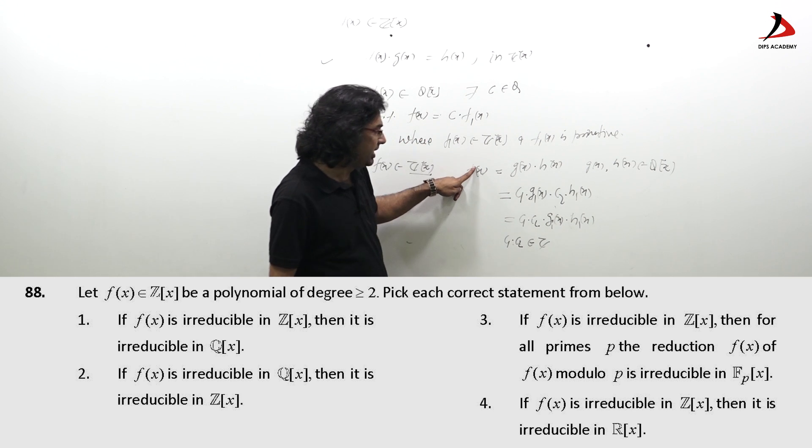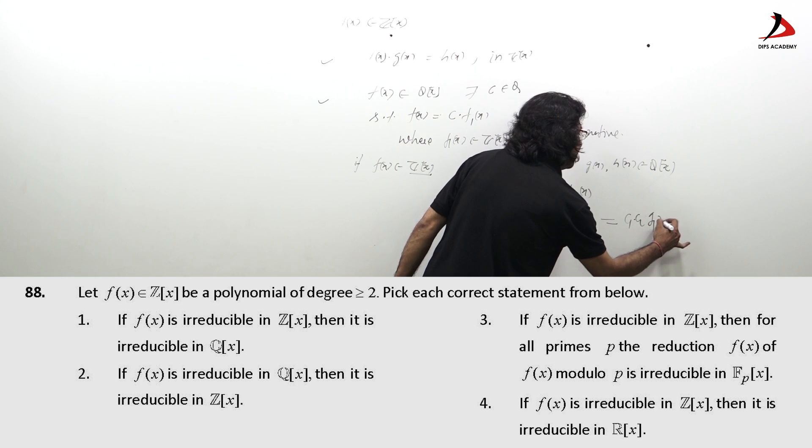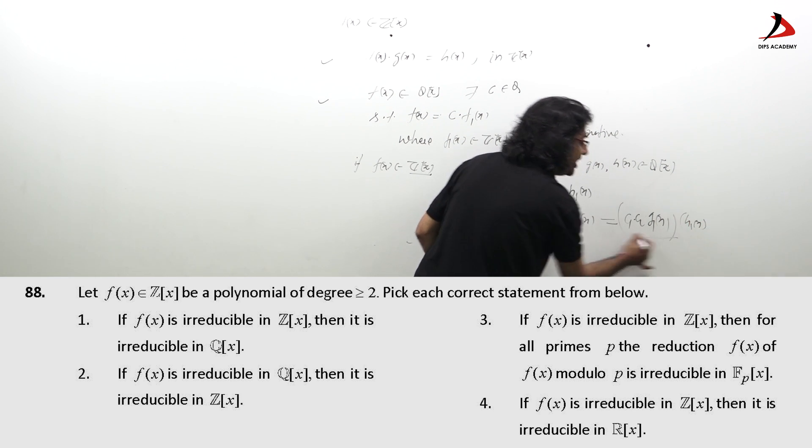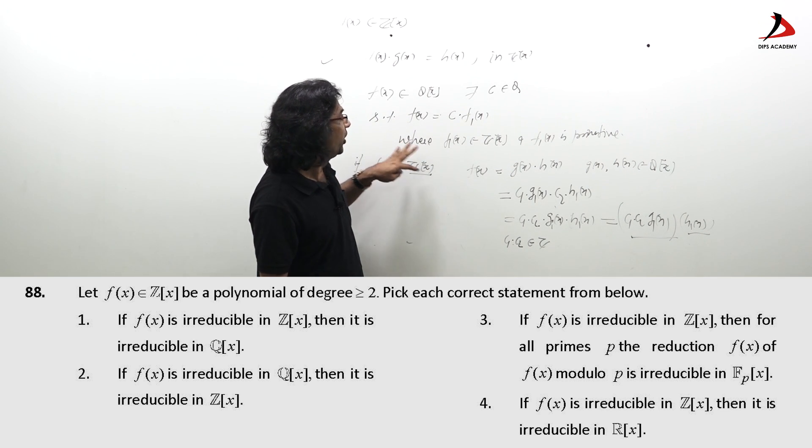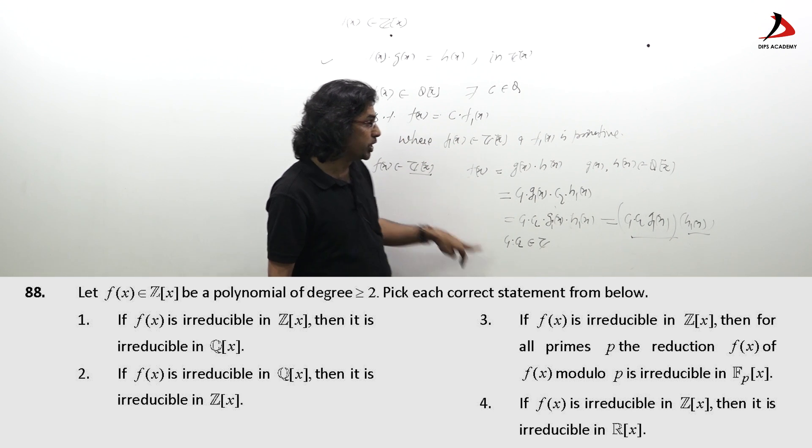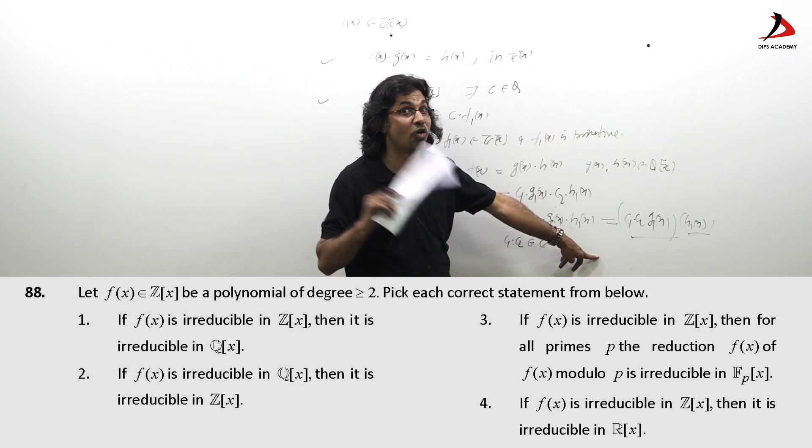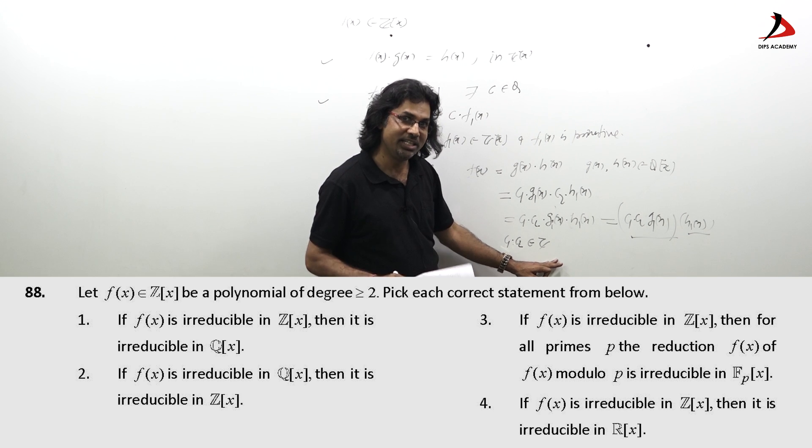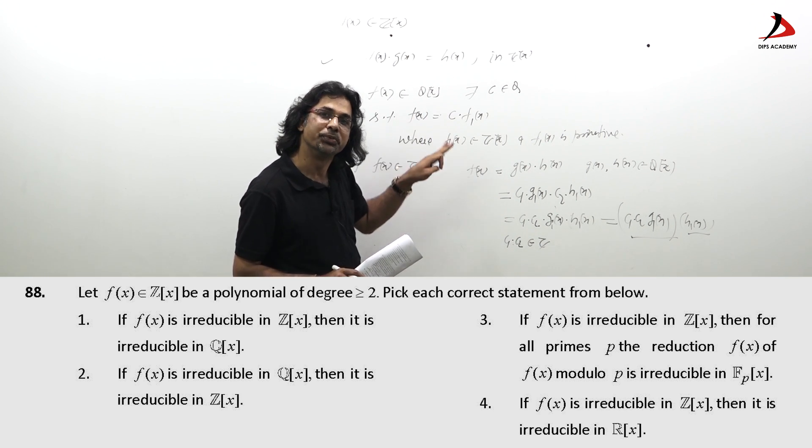c1 c2 has to be Z that means I have expressed this as c1 c2 g1(x) and h1(x) this is over Z this is over Z. If f is reducible over Q implies f is reducible over Z, p implies q then not q implies not p. That is if f is irreducible over Z implies f is irreducible over Q.